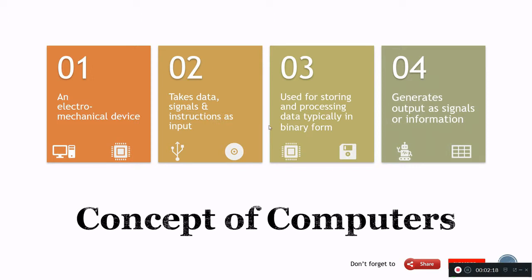By definition, a computer is an electro-mechanical device that takes data, signals and instructions as input, stores data intermediately, and then generates an output as signals or information. These four points you can see.